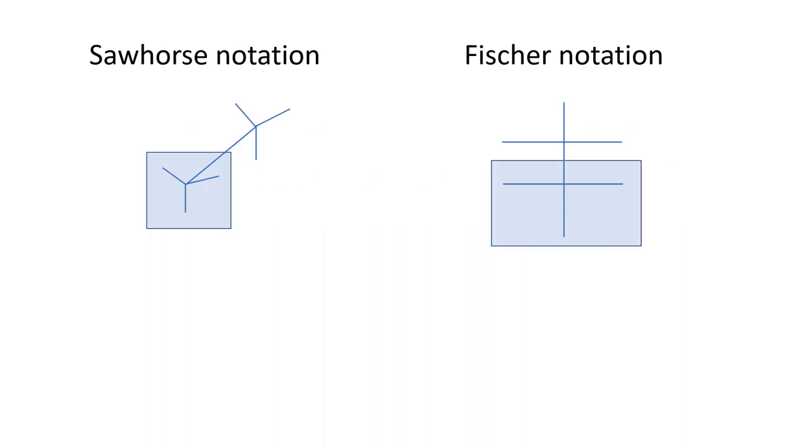So in a sawhorse notation we all know that we write as two Ys which are connected by a straight line. We can also write this notation in a different way, something like this: an inverted set of Ys can be drawn.